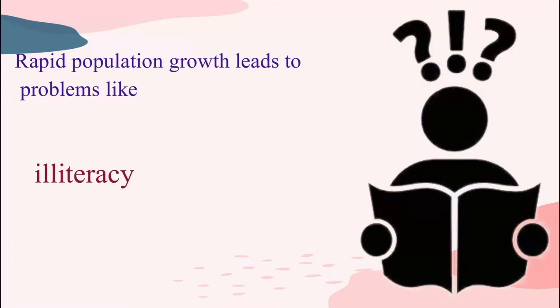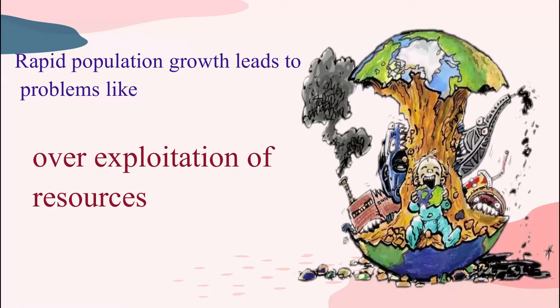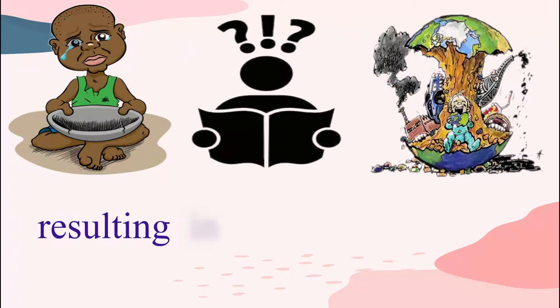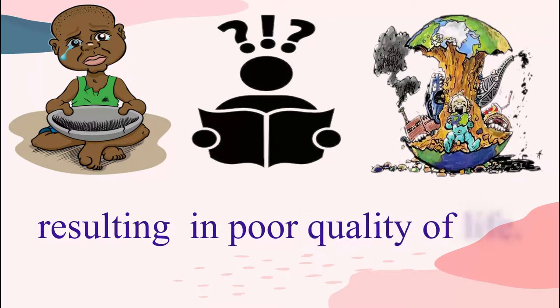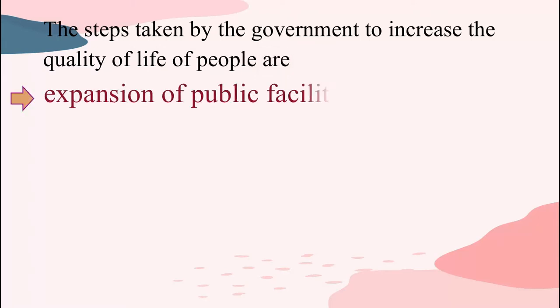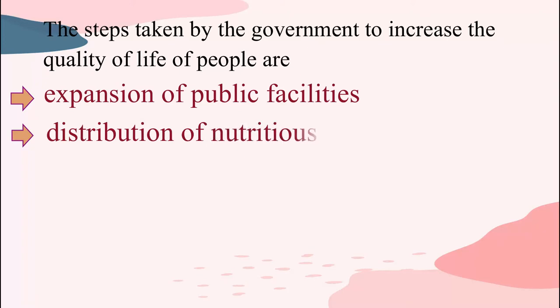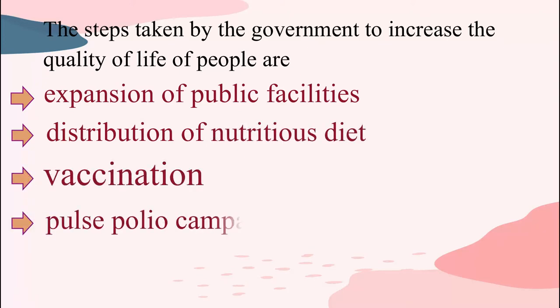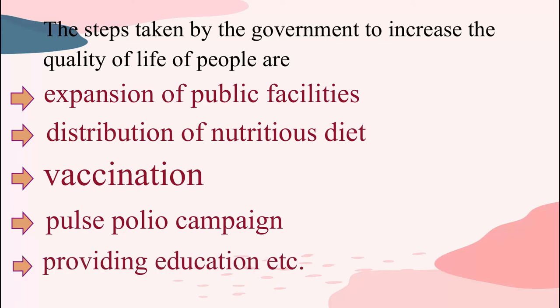The steps taken by the government to increase the quality of life of people are expansion of public facilities, distribution of nutritious diet, vaccination, pulse polio campaign, providing education, etc.